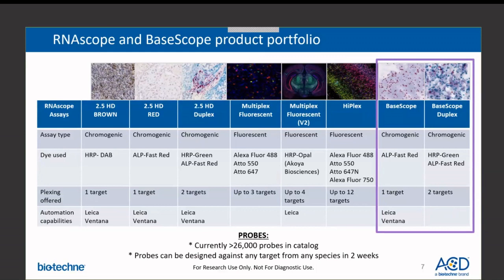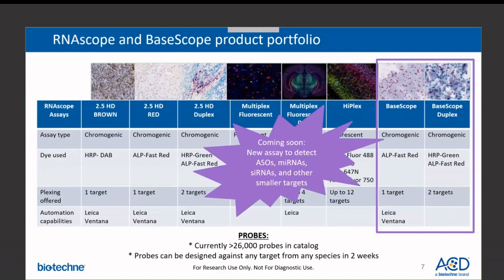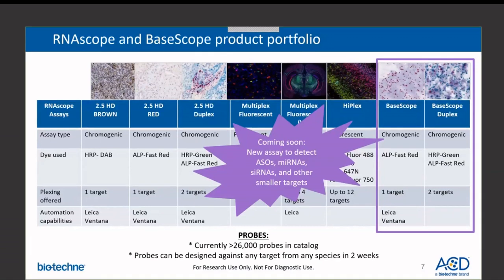As of today, we have over 26,000 target probes in our catalog. Custom probes can be designed against any target from any species in as little as two weeks. Expanding our product portfolio, not only do we have assays to detect mRNAs, long non-coding RNAs, short targets, splice variants, and point mutations, but we'll be releasing a new assay in the summer to detect smaller RNAs, including antisense oligos, microRNAs, and small interfering RNAs.